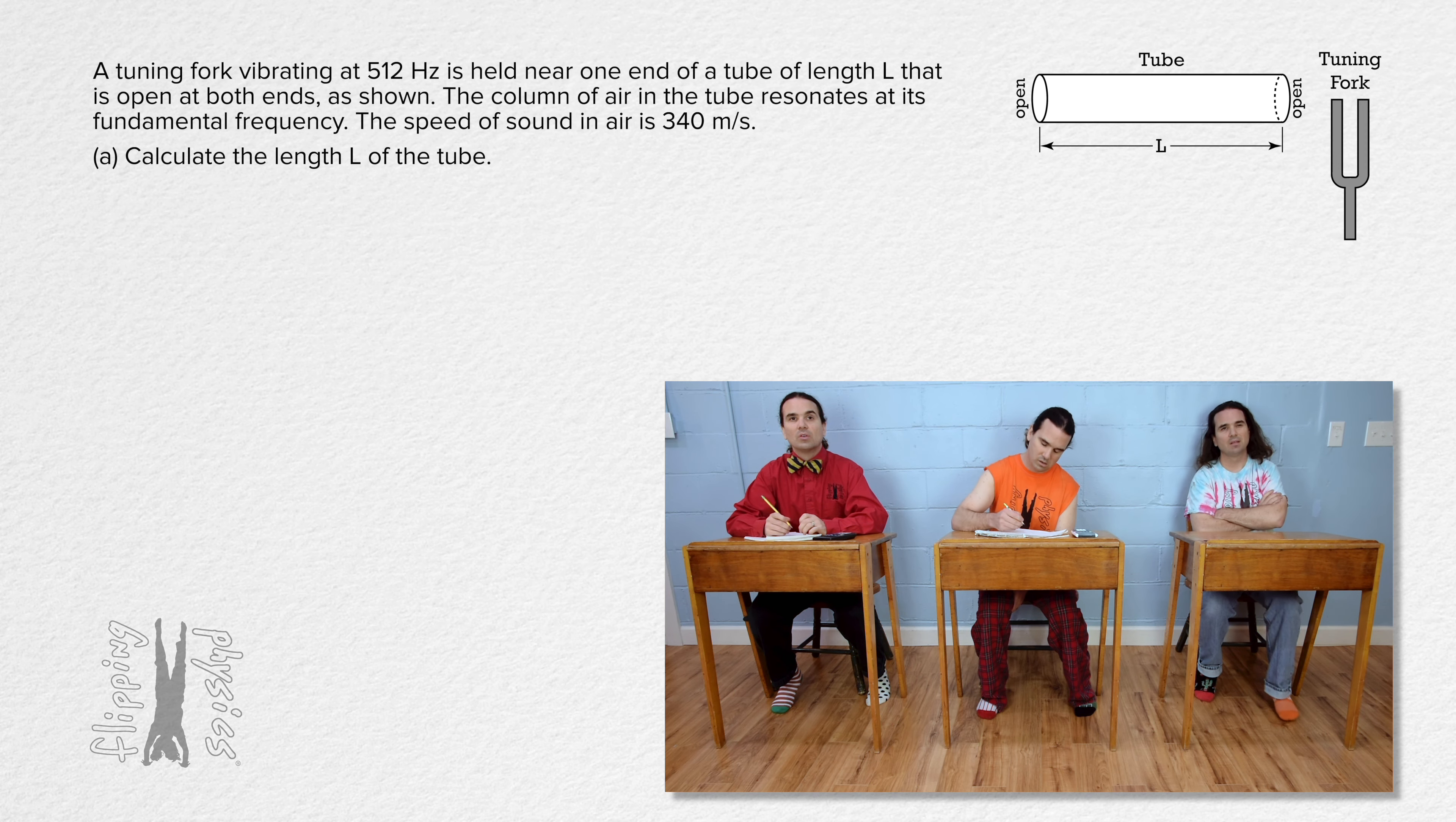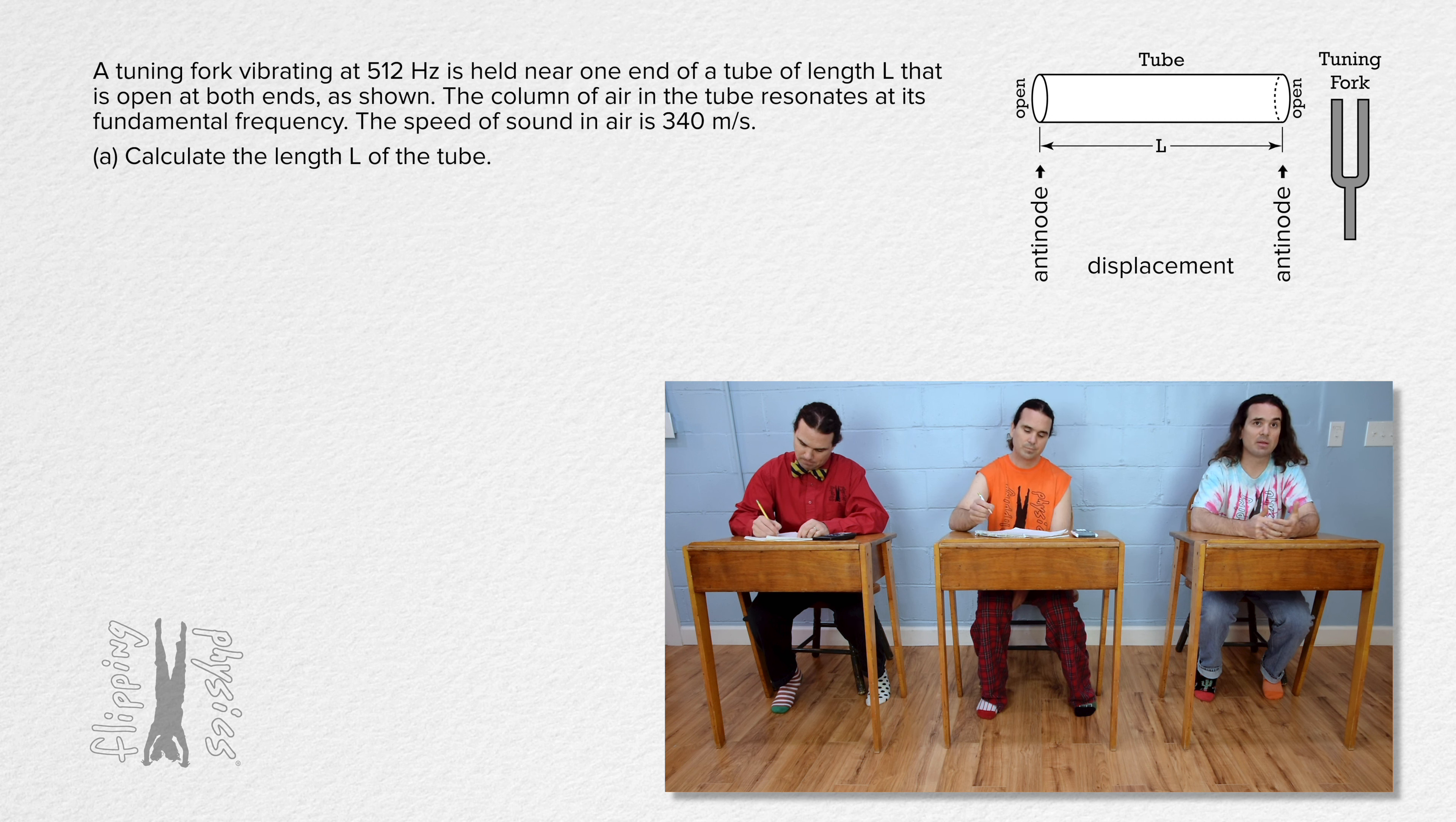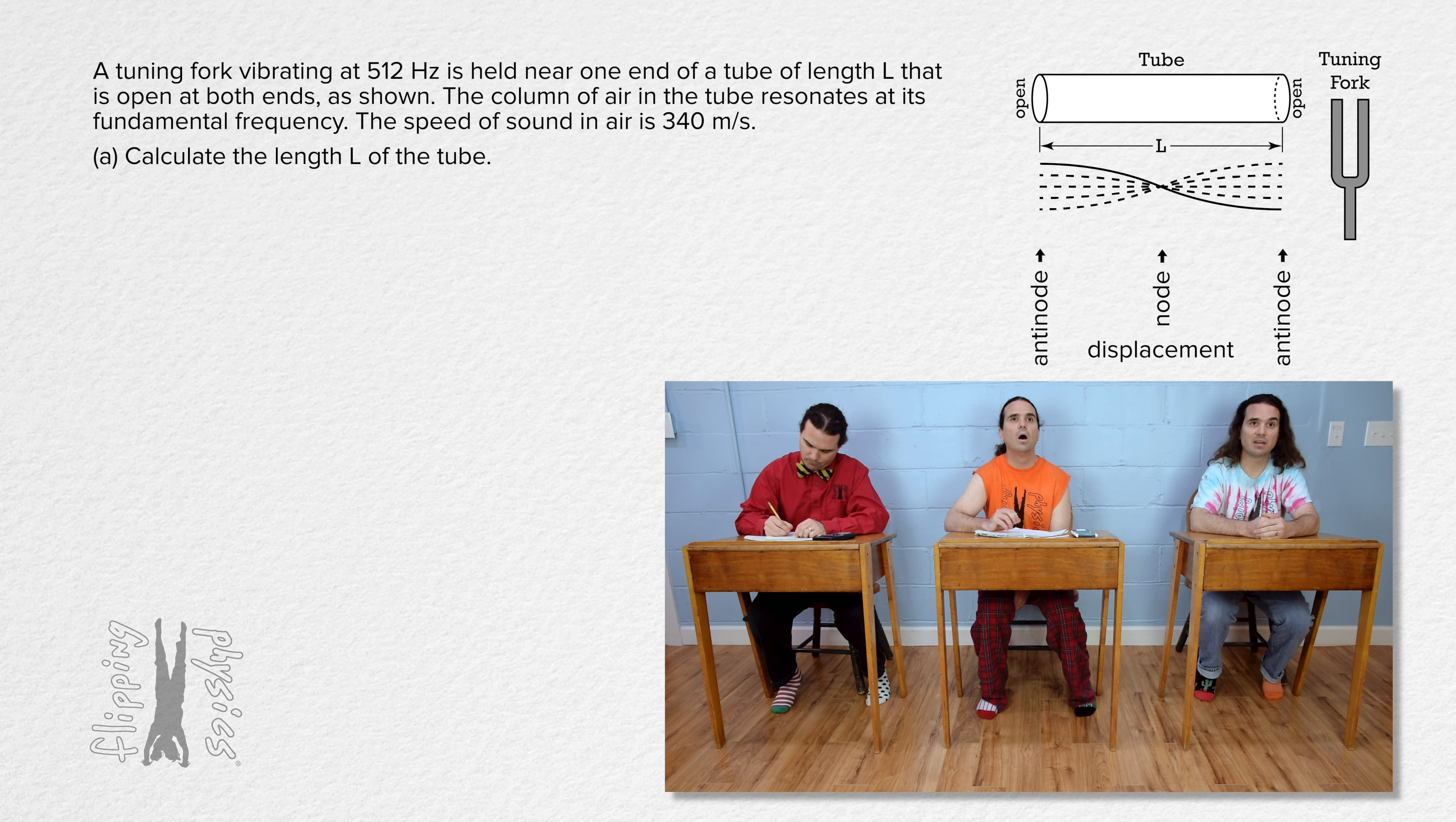Okay, well, as we learned in that video, because the tube is open at both ends, each end will have a displacement antinode, and when resonating at its fundamental frequency, the standing wave created will have the longest possible wavelength which can create a standing wave pattern in this tube. Therefore, there will be no other displacement antinodes in the tube, and the standing wave pattern will have a displacement antinode on each end and a displacement node in the middle. In this case, then half a wavelength will equal the length of the tube.